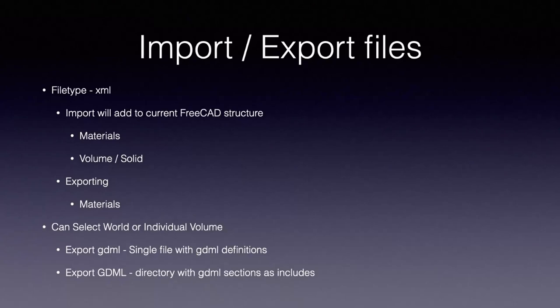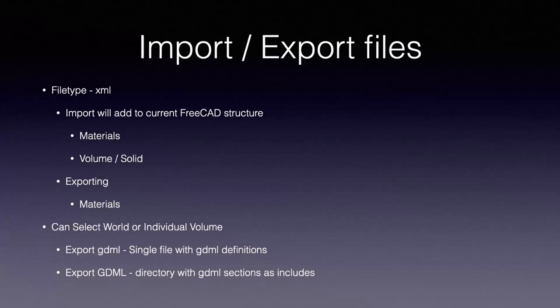A couple of things about import and export. If you import an XML file, its definitions are added to the current design — you can do this for materials or a combination of a volume and a solid. You can also export XML: for example, if you select the materials group, then file, export, XML as a file type, it will create an XML file with just those materials in it, which you can then use within a different design. For exporting GDML, you select a world volume or an individual volume, then file, export, and choose GDML as the file type.